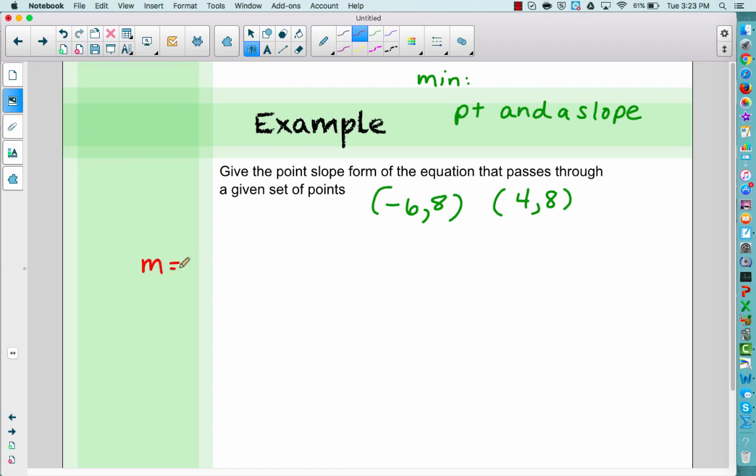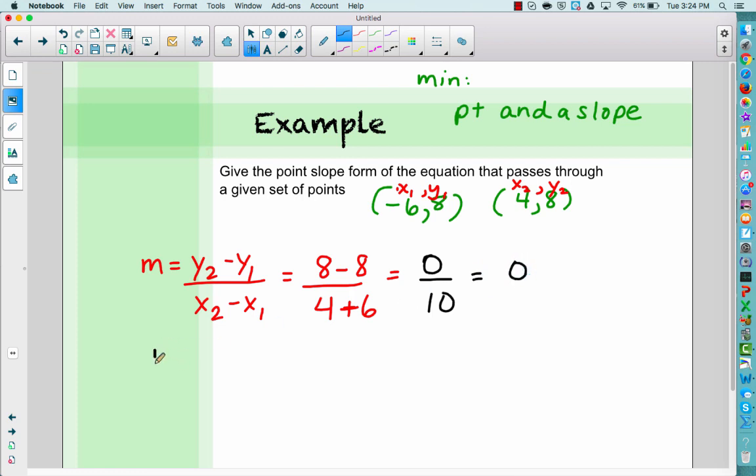As a review, the slope formula—change in y means subtract the y's over a change in x means subtract the x's. Rise over run. So I'm going to take my—I'm going to call this x₁, y₁. I'm going to call this one x₂, y₂. And I'm going to find the slope. So I'm going to do 8 minus 8 over 4 minus -6, so 4 plus 6. Oh, wow. What happened? I got a 0 in the numerator. If the 0 is in the numerator, it means 0. So I have a slope of 0.